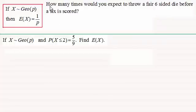In the first example, we're asked how many times would you expect to throw a fair six-sided die before a six is scored, and this is very straightforward. The second example though is a little bit more demanding, where we've got X being distributed as a geometric distribution with parameter P, and the probability of X being less than or equal to 2 is 5 ninths. Find E of X.